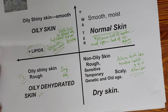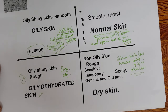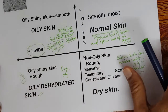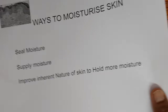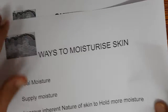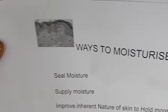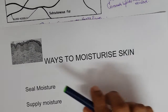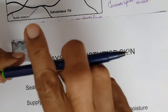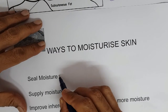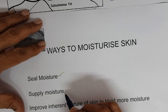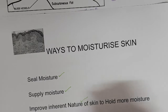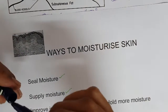To summarize skin types: normal skin has optimum sebum and optimum moisture; oily skin has excess sebum but optimum moisture; oily dehydrated skin has excess sebum but no moisture; dry skin has both low oil and low moisture. Based on skin type, cosmetic products are designed. The three ways to moisturize the skin are: seal moisture onto the skin, supply moisture to the skin, and improve the inner nature of the skin to hold moisture.